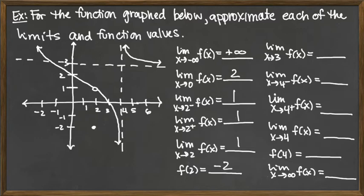Moving to what's happening at x equals 3 — the function is nice and continuous there. It happens to be that the graph crosses the x-axis at 3. Since it's continuous, the limit value as x approaches 3 is actually the function value f of 3, and f of 3 is 0. So our limit value is 0.